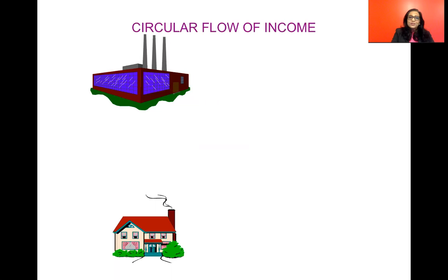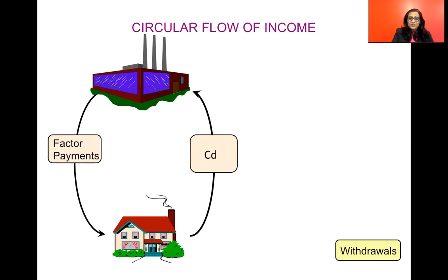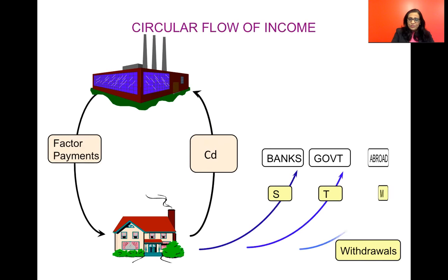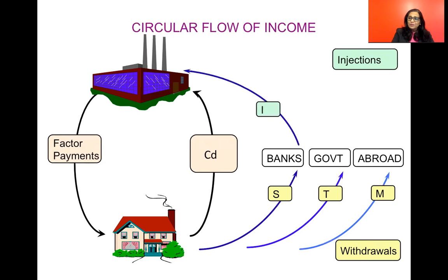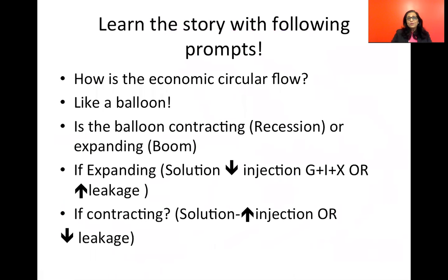Let's get back to our initial circular flow that we have learned in our earlier topics. You can see the three withdrawals from the economy were the savings, taxes and the imports, and the three injections into the economy are the investments, government spending and the exports. And thinking of this balloon again — how is the economic circular flow? That's what we need to ascertain before we even talk about any policy measure, visualizing it again in the form of a balloon.